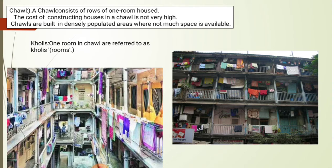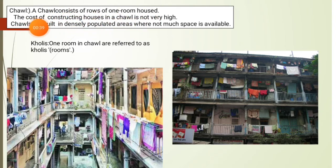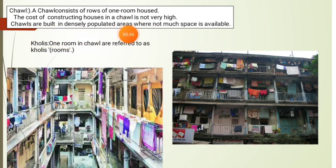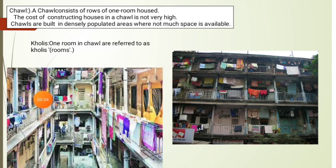Before starting the chapter, let us learn about different types of shelter. The first picture is of a Chawl. These types of Chawls are generally found in cities. A Chawl consists of rows of one-room houses. The cost of constructing houses in a Chawl is not very high. Chawls are built in densely populated areas where not much space is available. One room in a Chawl is referred to as a Chhuli.